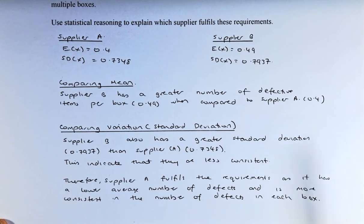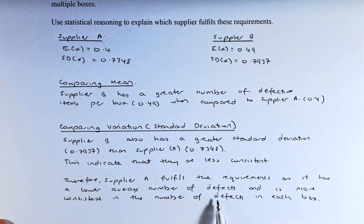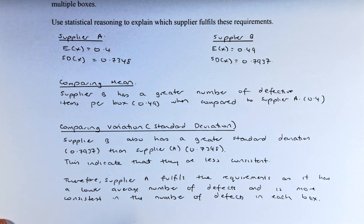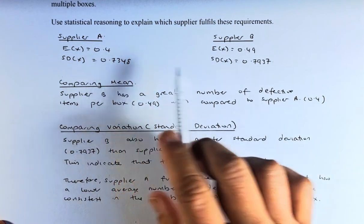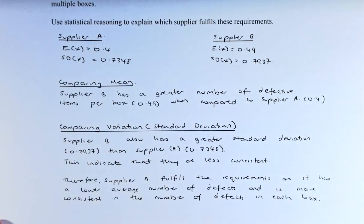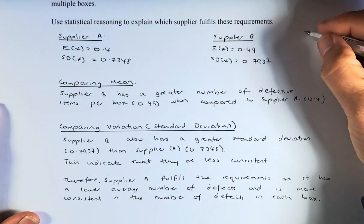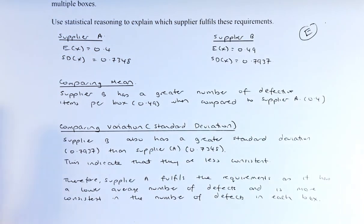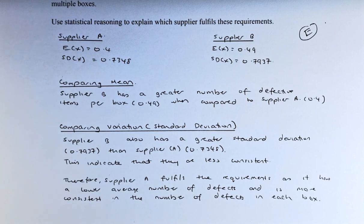Which one shall the company choose from? Therefore, Supplier A fulfills the requirement with a low number of defective items as it has a lower average number of defects and is more consistent because the number of defects in each box varies less, since A has a smaller standard deviation than B. In both cases, in terms of mean and standard deviation, we should choose Supplier A. There is an excellence in this paper, and I think you should be able to do well in this paper. Hope to see you in question 3A of this paper in our next video. Cheers, everyone. Have a good day.